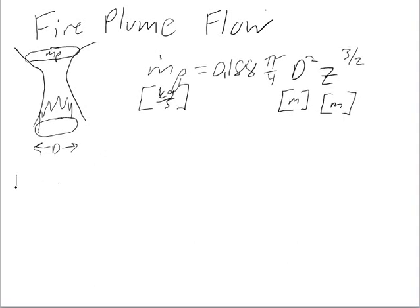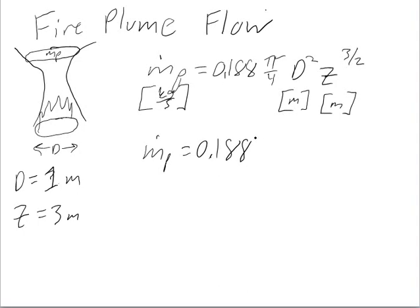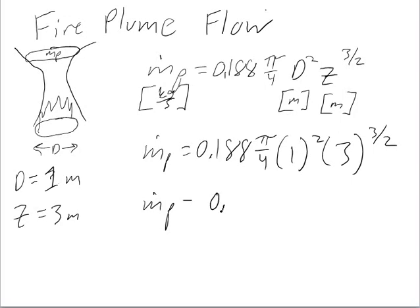So let's say we had d is equal to 1 meter, a 1 meter diameter fire, and we were interested at what the plume flow was at 3 meters above the floor. So we would go m.p is equal to 0.188 times pi over 4 times 1 squared times 3 to the 3 halves power. And then m.p is equal to 0.767 kilograms per second.